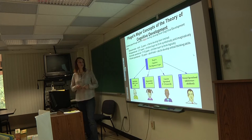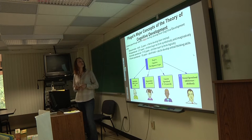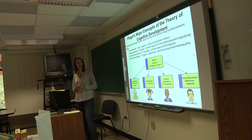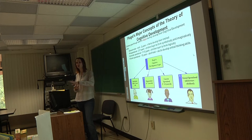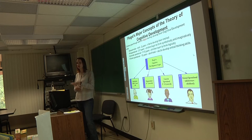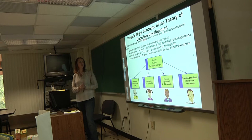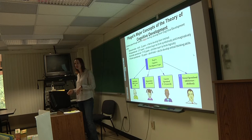In the sensory motor stage, from birth to two years old, infants develop their intellect. In the pre-operational stage, two to seven years old, children begin to develop symbolically and imaginatively. In concrete operational, seven to twelve, children learn to think logically. In formal operations, twelve to adulthood, adults develop critical thinking skills.